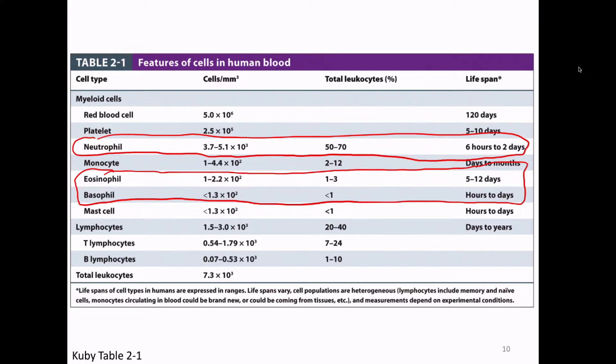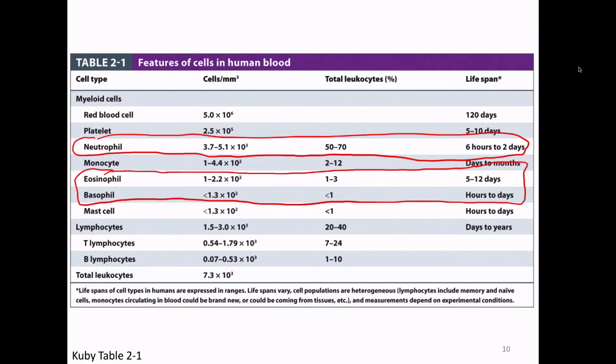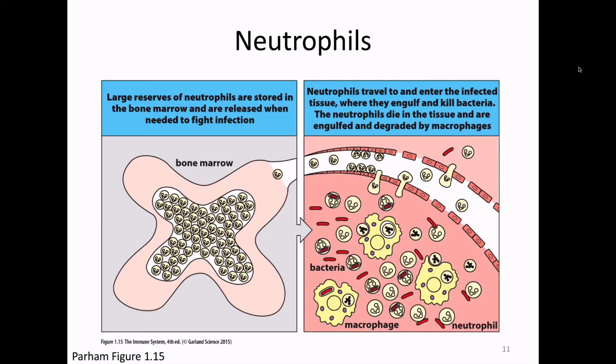Neutrophils can change pretty quickly and are by far the most common, with a pretty important function — they're the pac-man ones that go around doing phagocytosis. Your bone marrow is full of neutrophils, and if you get sick, those neutrophils get released into your bloodstream. Having a high neutrophil count in your bloodstream can be an indication of infection because you've just released them from the bone marrow. These numbers are among the first things a doctor looks at in blood work.